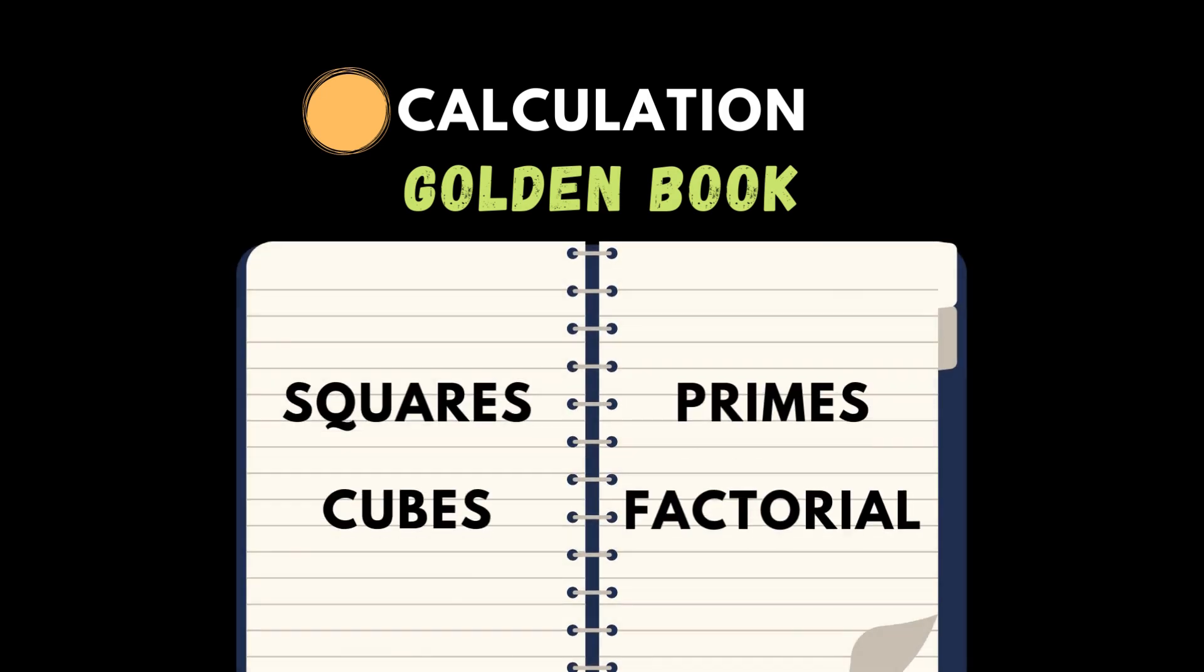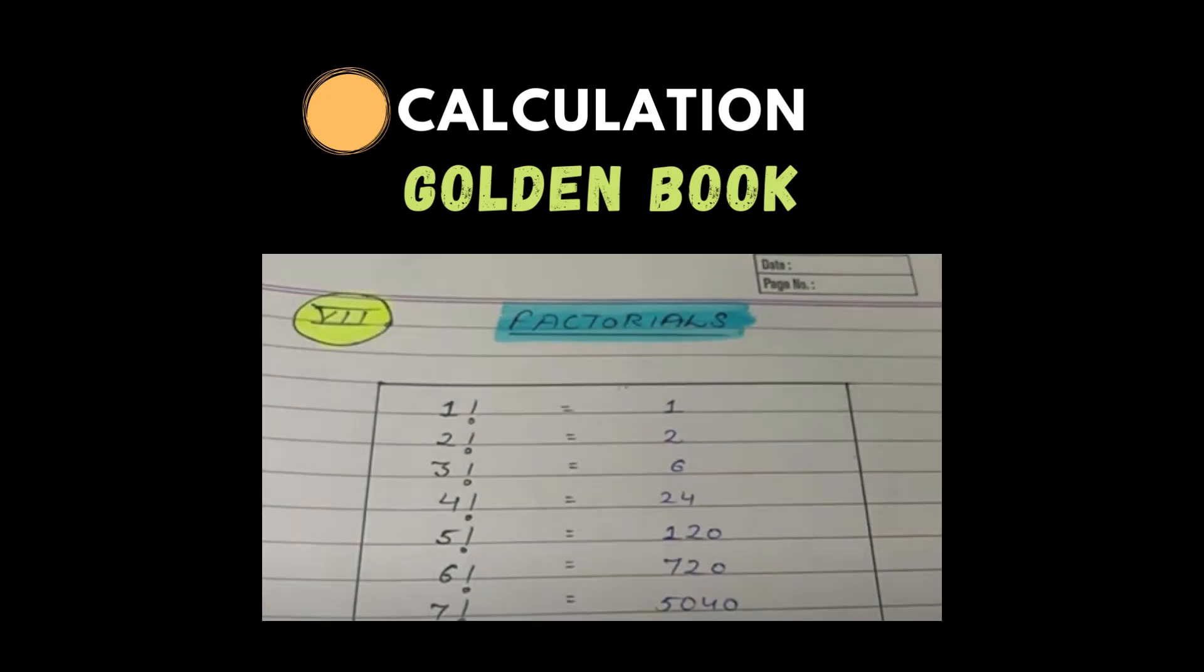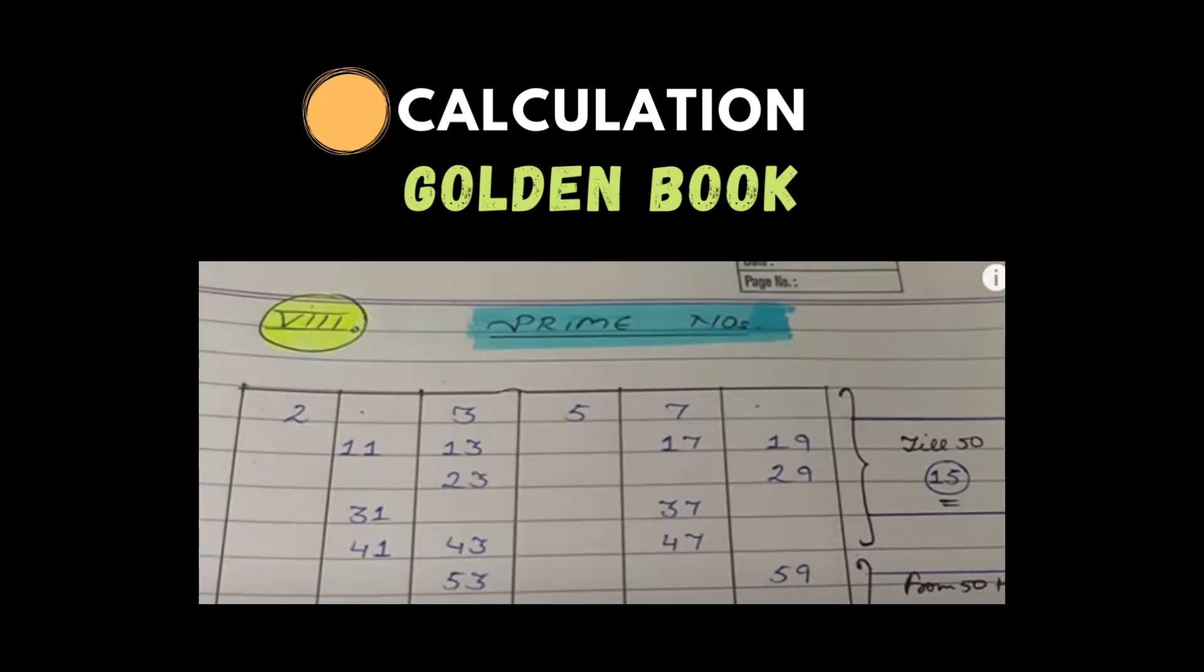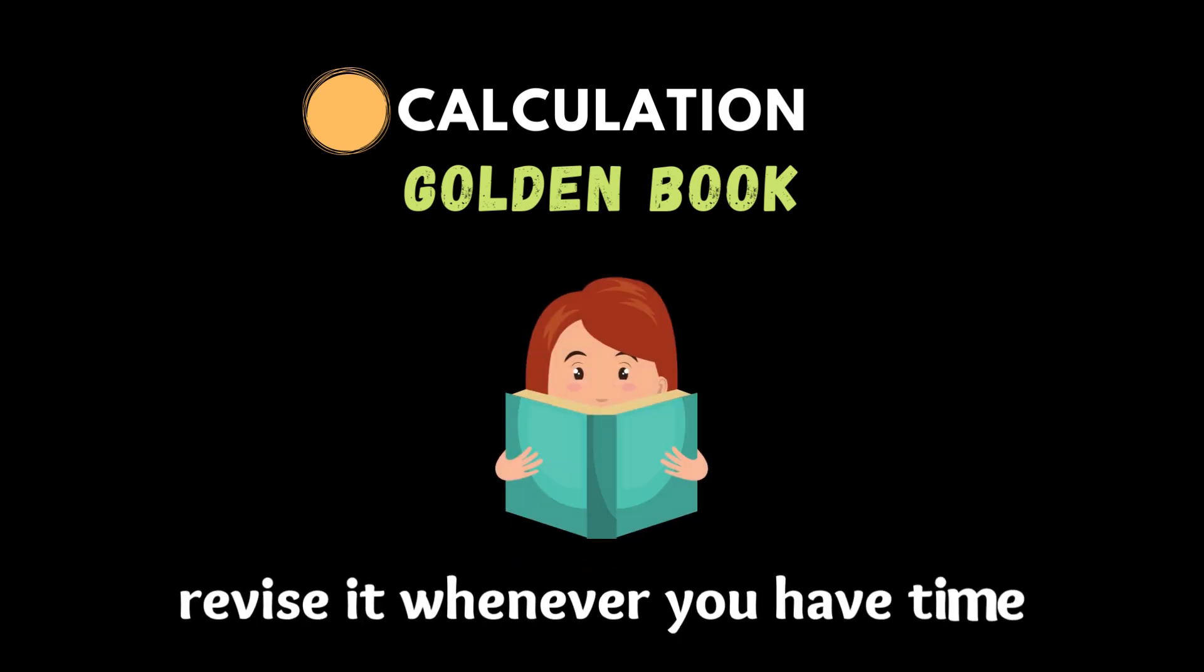The final resource I would recommend is to revise your golden book. Golden book is just a name that I had given to a repository of cubes, squares, factorials, prime numbers, these kind of things that I kept in a particular notebook. I'll show it to you how it looks like. You simply have to create this. You can go through my golden book. I'll put it in the description. And you keep revising it whenever you have some free time. Could be before taking a mock. Could be just when you have a couple of minutes spare in the day. Just revise it. It'll help you with your calculation speed. Now, these were some tips on calculation speed.